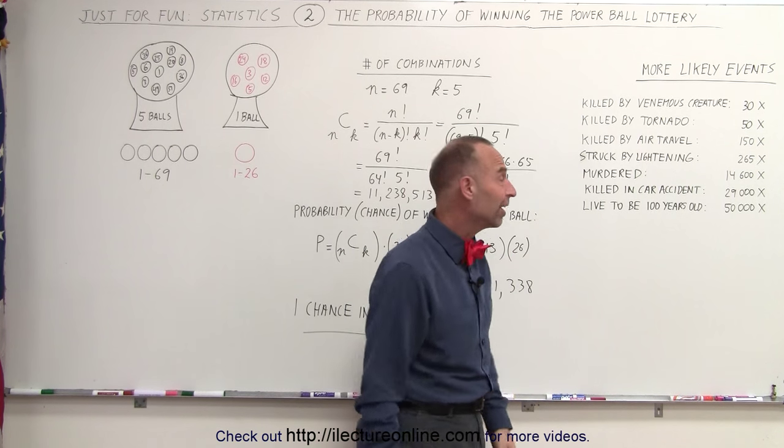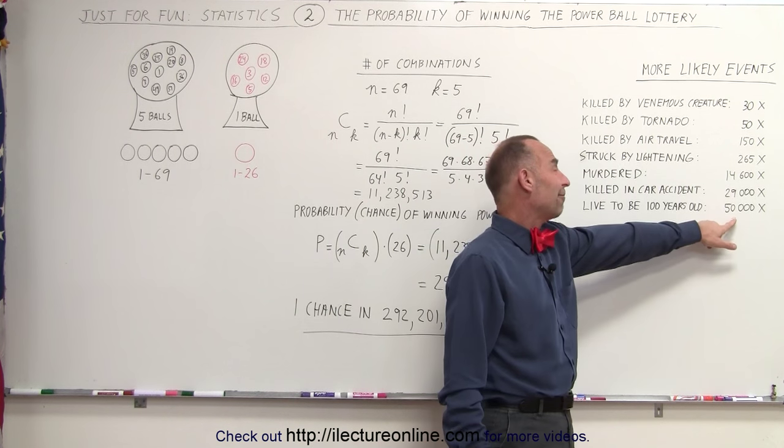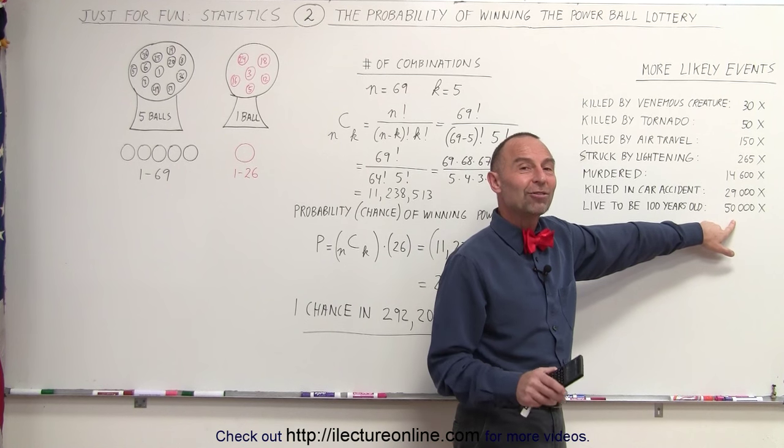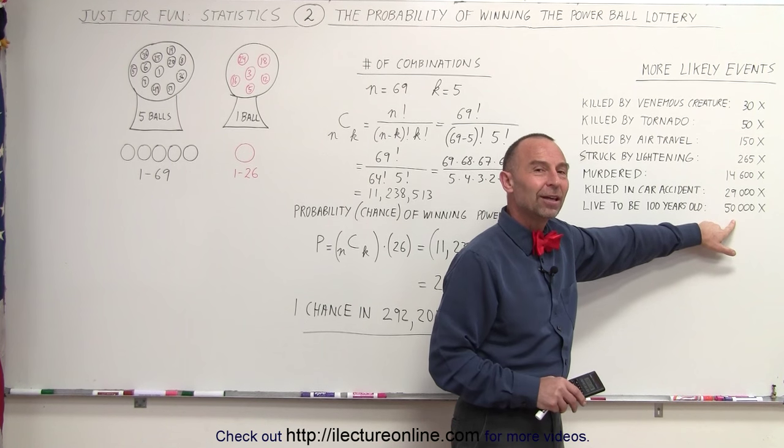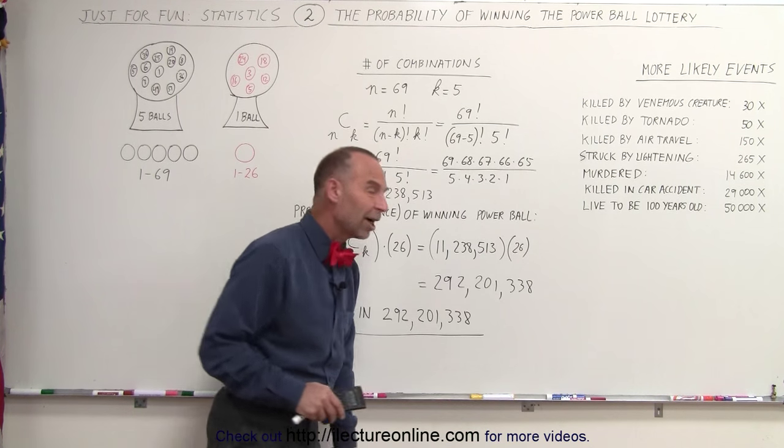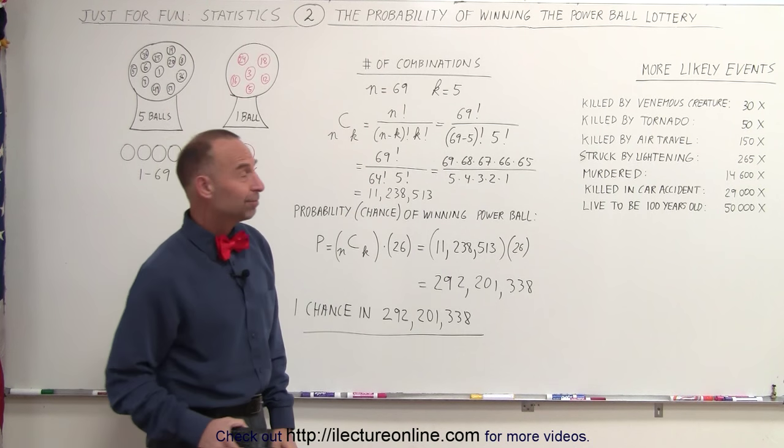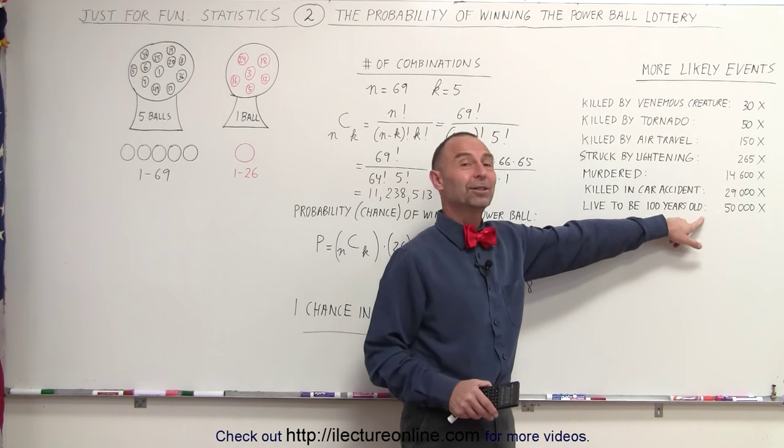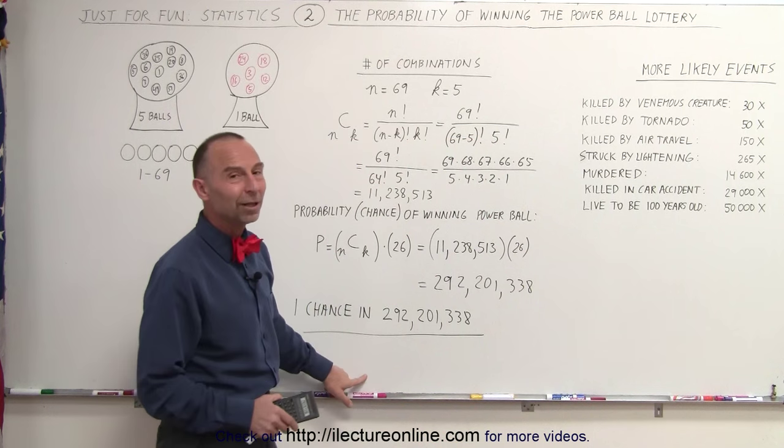And finally, this is kind of interesting, you have 50,000 times more chance of making it to 100 years of age than your chance of actually winning the lottery. So if you want to make a bet, I would bet I'll turn to be 100, rather than I'm going to win the lottery.